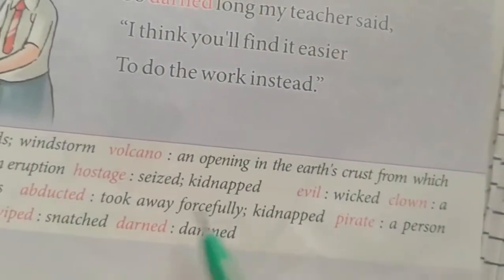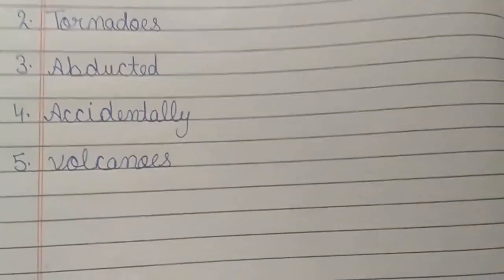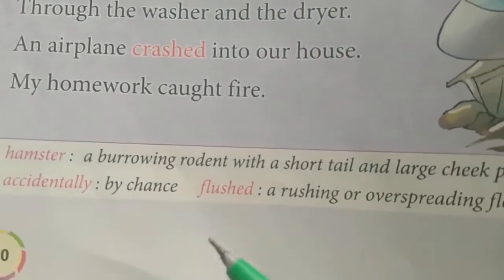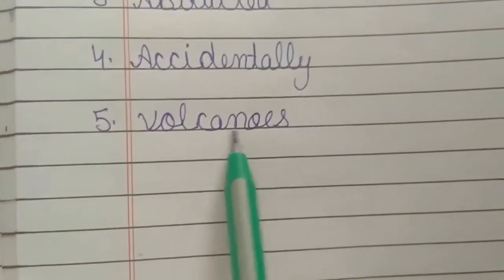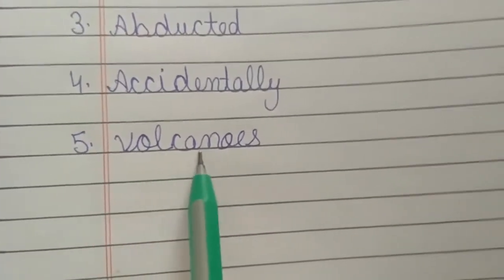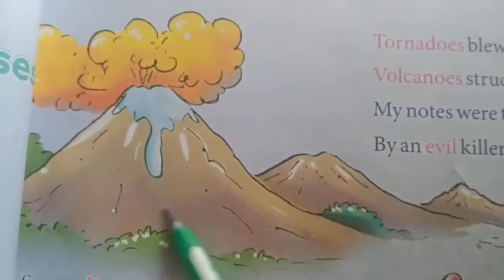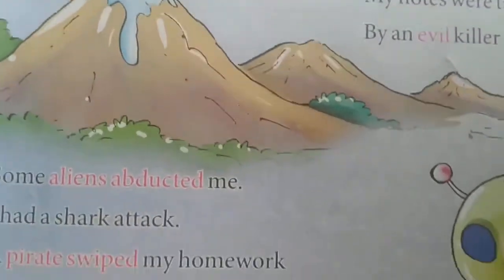Abducted means kidnapped — kisiko kidnap kar lena. The fourth word is 'accidentally' — accidentally means by chance, achanak se. And the last word is 'volcanoes' — V-O-L-C-A-N-O-E-S — volcanoes means jwala mukhi.